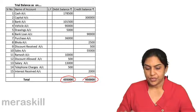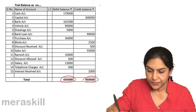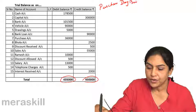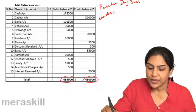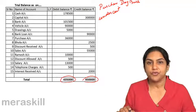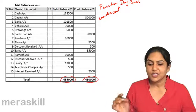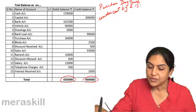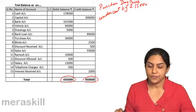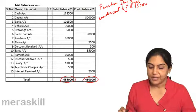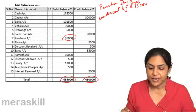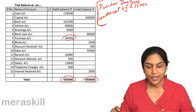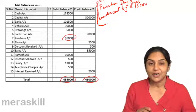Suppose this difference is on account of purchase day book undercast — I am just taking one example. It is possible that this difference of 15,000 is due to 5, 6 or more errors. Just suppose for you to understand — suppose the purchase day book has been undercast by rupees 15,000. That is why you have a difference of 15,000. If the purchase account was increased by another 15,000, the entire thing would have tallied. Right now I have a trial balance where the difference is not tallying.